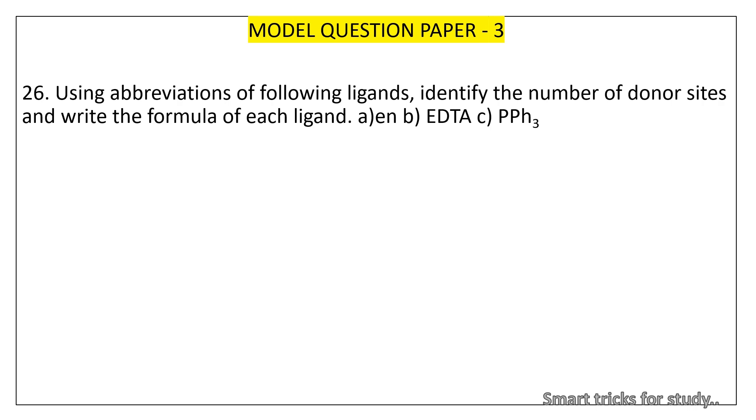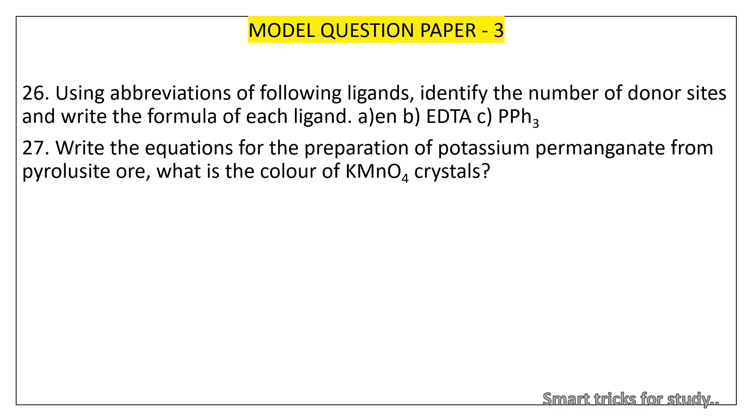Model question paper 3. 26. Using abbreviations of following ligands, identify the number of donor sites and write the formula of each ligand: En, B, EDTA C, PPH3.